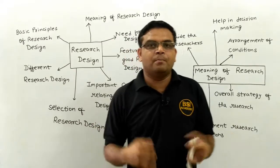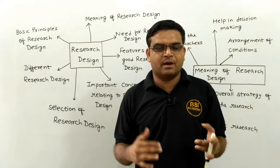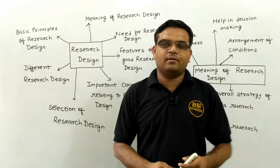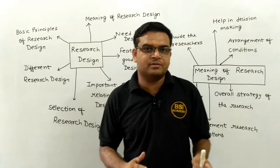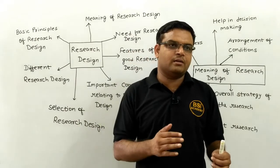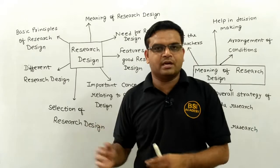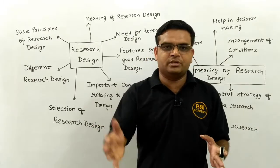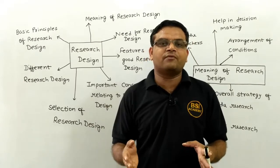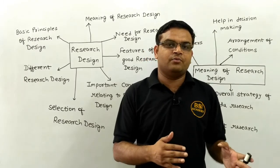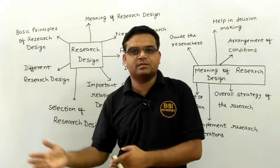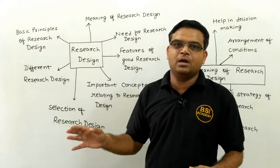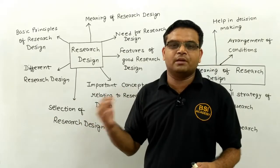Research design is something like a blueprint or the master plan for any researcher, because there are different types of alternatives that we will cover in our research design. For example, if you use one strategy and this strategy fails after some time, then what are the different types of alternatives we should cover in our research design. These are important points which every researcher adopts in their research design.